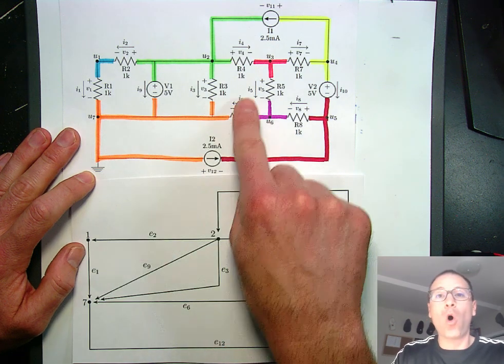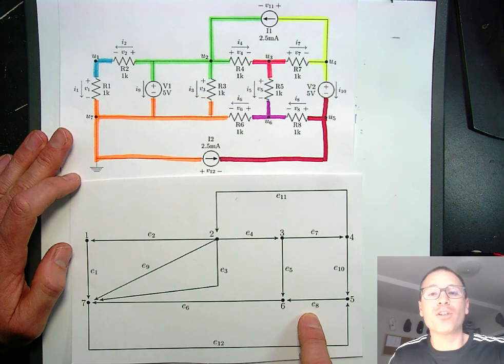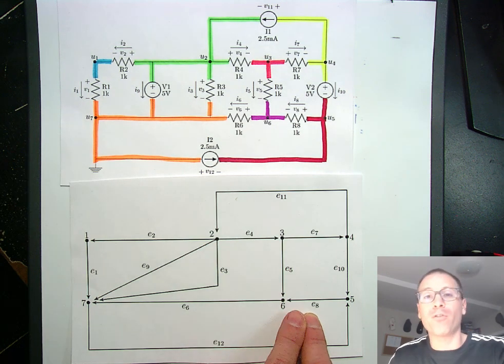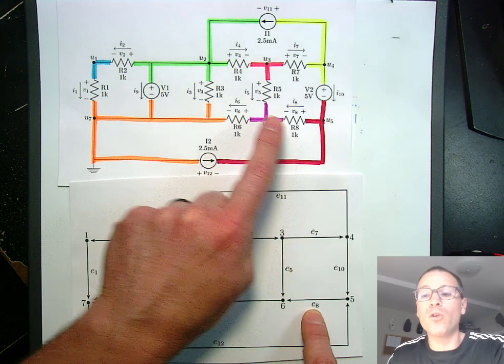We continue going all the way through the resistor. So the first 8 elements, the first 8 resistors, correspond to the first 8 edges.